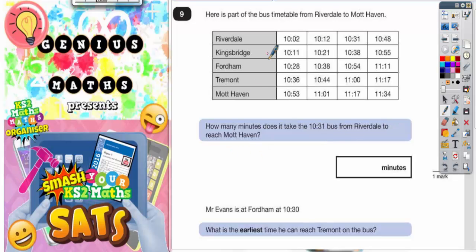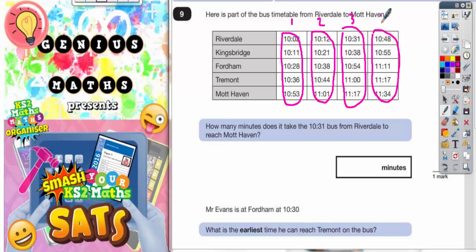Now the important thing to remember here is that each column is a different bus. So this column is bus number 1, this column is bus number 2, this column is bus number 3, and this column is bus number 4. They've got to be different buses because if they weren't different buses it wouldn't make sense.